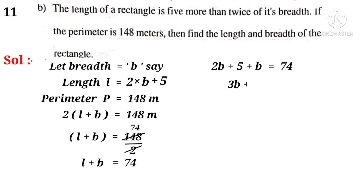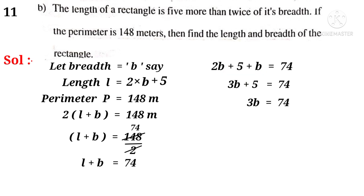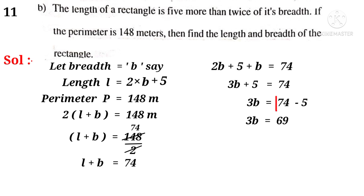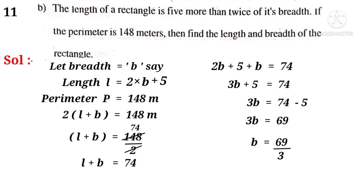3b plus 5 is equal to 74, because 2b plus b is equal to 3b. So, 3b is equal to 74 minus 5. Because, 5 when transposed to the right hand side, it becomes minus 5. Now, 3b is equal to 69, because 74 minus 5 gives 69. So, b is equal to 69 by 3. On simplification by 3, 23 times. So, breadth b is equal to 23 meters.